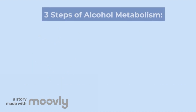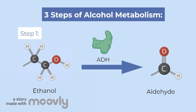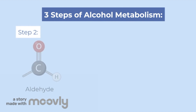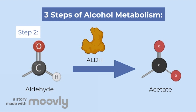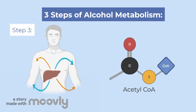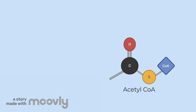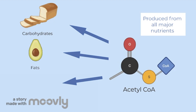There are three steps involved in alcohol metabolism. In the first step, ethanol is converted to a molecule known as aldehyde by the enzyme alcohol dehydrogenase. Next, the aldehyde is converted to a molecule known as acetate by the enzyme aldehyde dehydrogenase. Much of this acetate leaves the liver and travels to other tissues where it is activated to acetyl-CoA. Acetyl-CoA is a molecule produced from all major nutrients consumed by humans, including carbohydrates, fat, and excess protein. Therefore, the breakdown of alcohol eventually produces the same products as the food we eat.